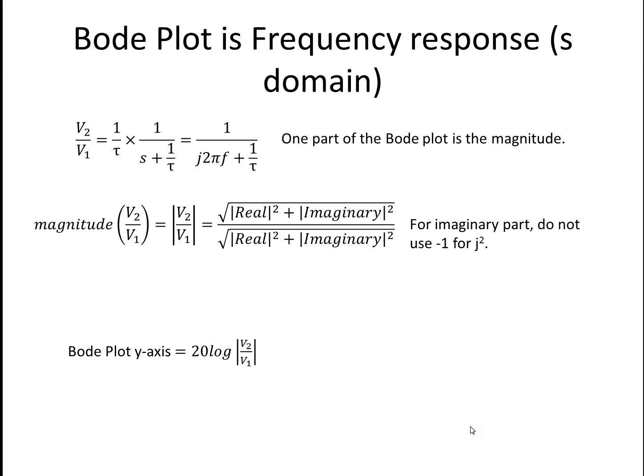Now the Bode plot is really just the frequency response in the S-domain, and we take this transfer function V2 over V1, and if we substitute S for J2πf we get the complete transfer function and we can plot the magnitude and the phase. The magnitude is just calculated by the real part squared plus the imaginary part squared and then we take the square root of that. Just like taking a vector magnitude, which is exactly what we're doing, and instead of an XY plane we have a real axis and an imaginary axis.